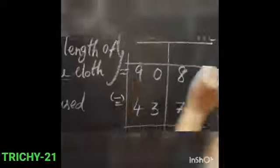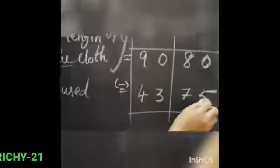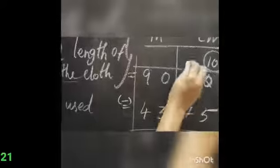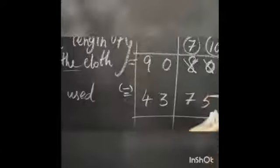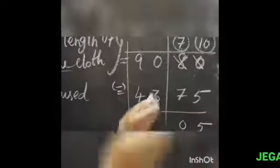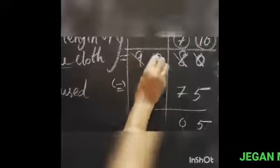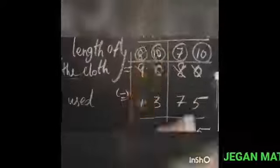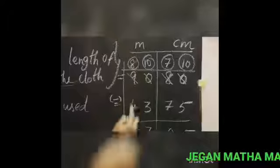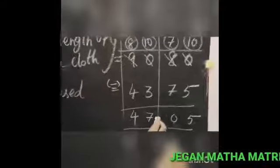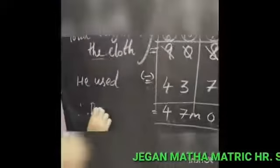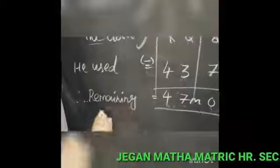Starting from the ones place: here 0, here 5 — we cannot subtract. So borrow from 8; instead of 0 we have 10, and 8 becomes 7. Subtract: 10 minus 5 equals 5. Then 7 minus 7 equals 0. So the centimeter result is 05 cm. Now the meter place: here 0, here 3 — we cannot subtract. Borrow from 9; instead of 0 we have 10, and 9 becomes 8. Then 10 minus 3 equals 7. Here 8 minus 4 equals 4. So the remaining length is 47 meter and 5 cm. This is the balance — the remaining cloth.